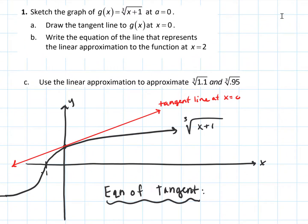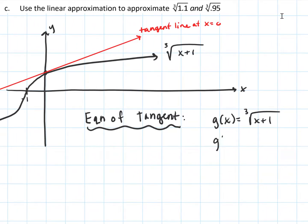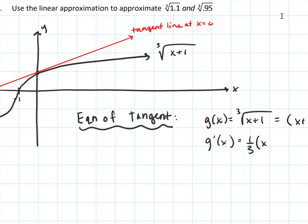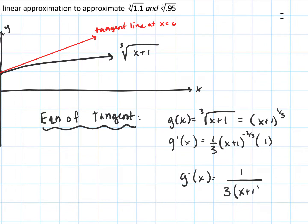To find the equation of the tangent line, we first find the derivative. g(x) = ∛(x + 1) = (x + 1)^(1/3). By the chain rule, g′(x) = (1/3)(x + 1)^(−2/3) · 1, which simplifies to g′(x) = 1 / [3(x + 1)^(2/3)]. That is our derivative.